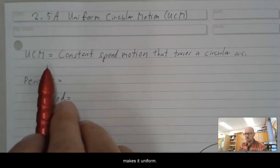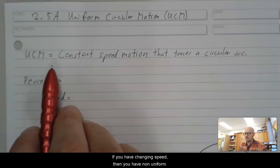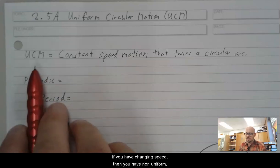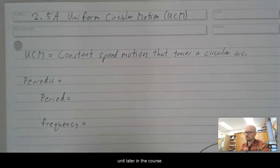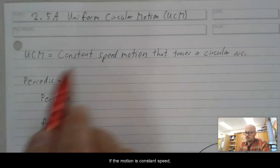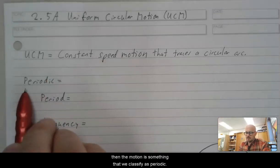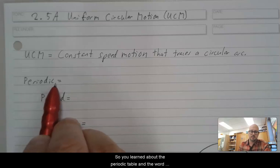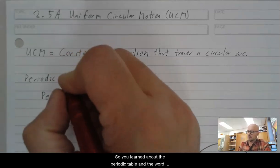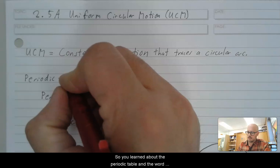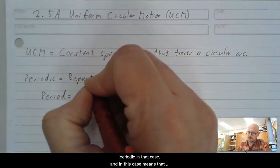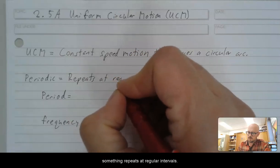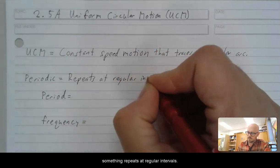Constant speed motion makes it uniform. If you have changing speed, then you have non-uniform, and we will address that in this unit as well as another unit later in the course. If the motion is constant speed, then the motion is something that we classify as periodic. So you learned about the periodic table.